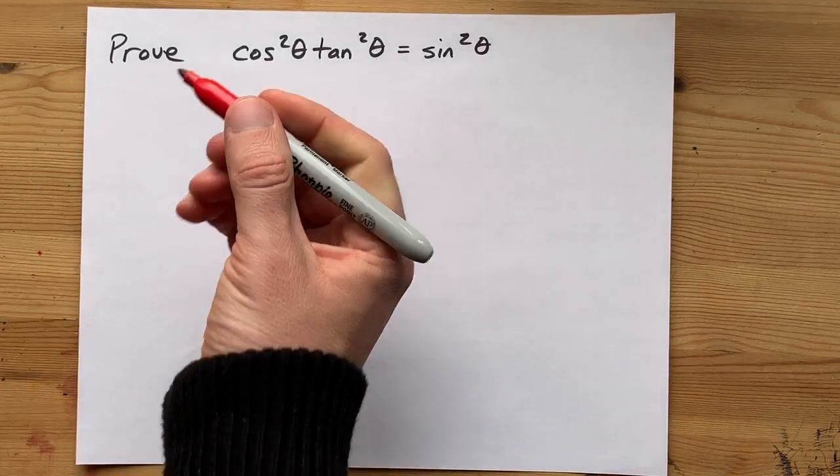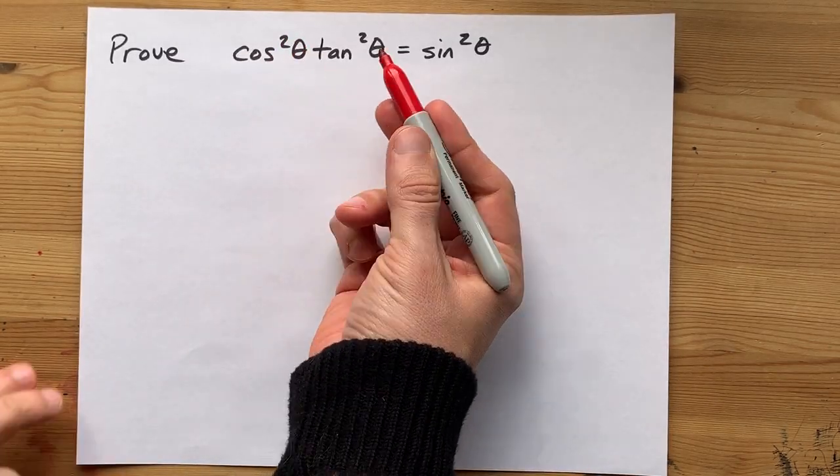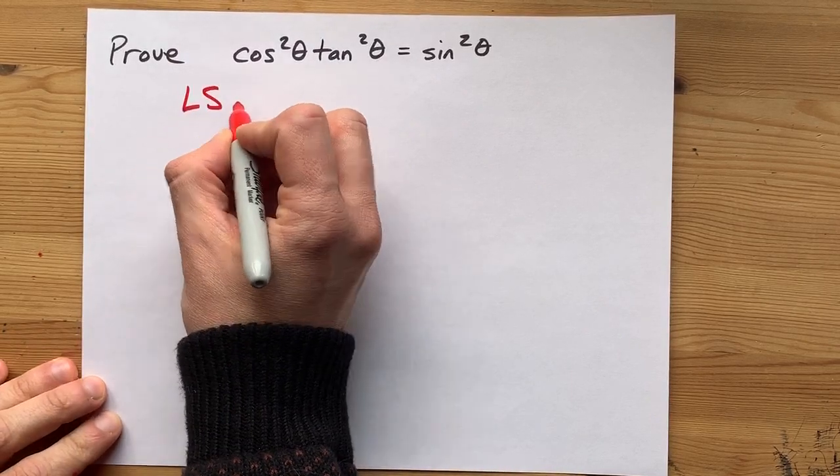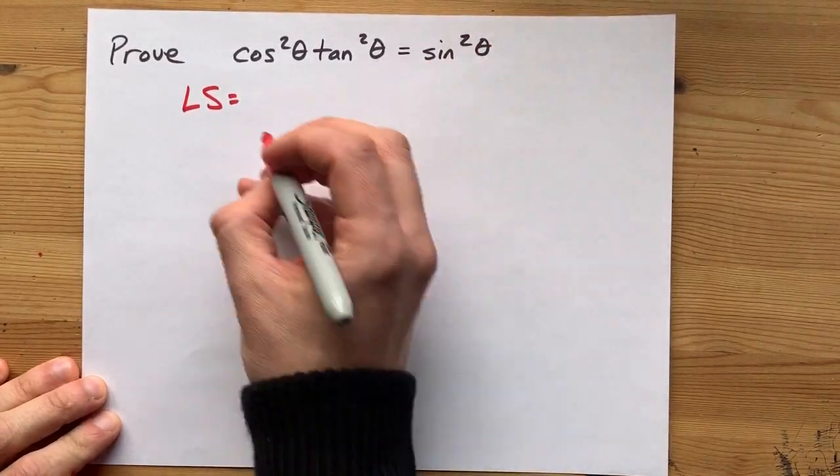Here we're asked to prove that cos squared of an angle times the tan squared of an angle equals the sine squared of that same angle.